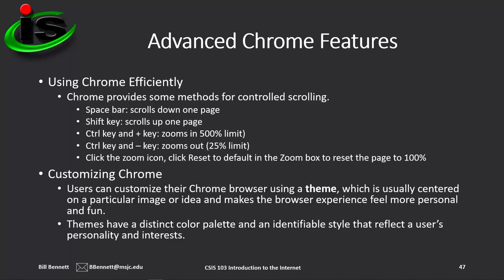If you want to use Chrome efficiently, it provides methods for controlled scrolling and zooming. You can use the spacebar to scroll down one page, and the shift key to scroll up one page. You can use Control and the plus key to zoom in up to 500% on a page, and Control and the minus key to zoom out to 25%. You can also click the zoom icon to open the zoom box, which allows you to reset or change the zoom percentage. If you have a mouse with a scroll wheel, you can hold down the Control key and use the scroll wheel to zoom in and out.